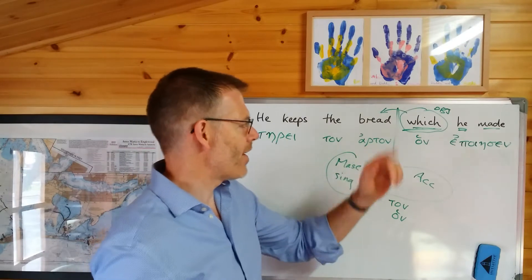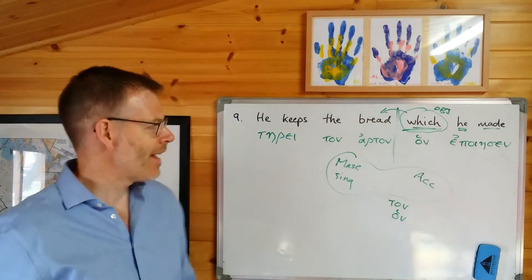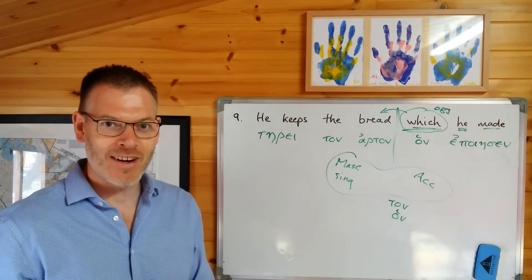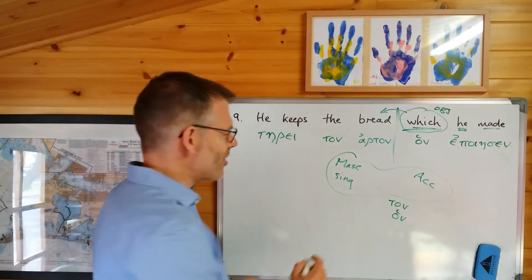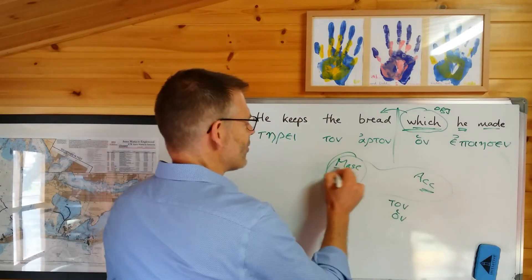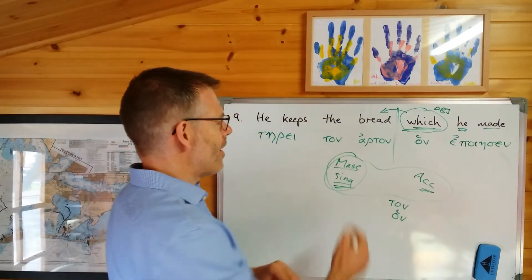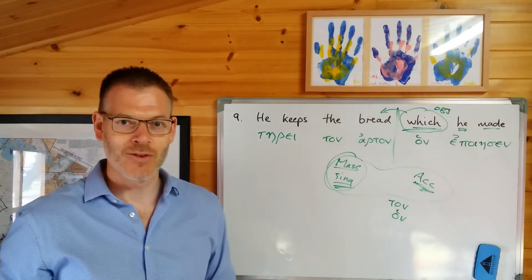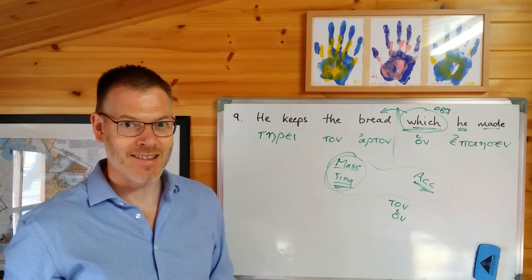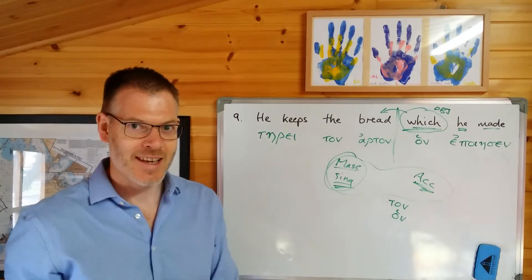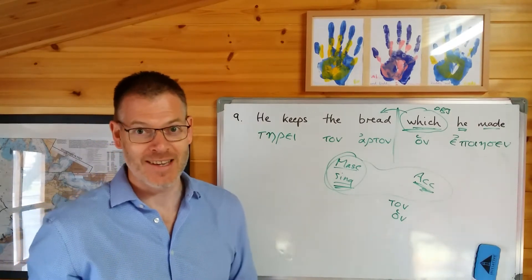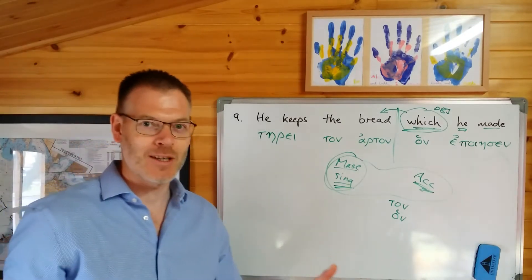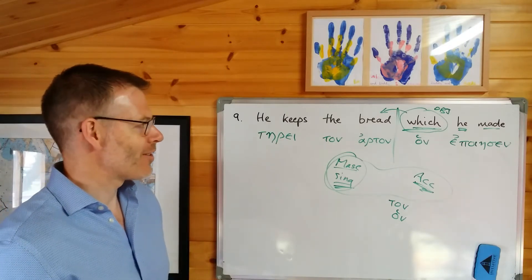So the full translation is: terei ton arton hon epoiersen — he keeps the bread which he made. You can see how doing it this way forces you to wrestle with exactly how relative pronouns work: gender and number determined by the antecedent, case determined by how it functions within its own relative clause. Once you've got that straight, it's so easy, and these words just drop out.